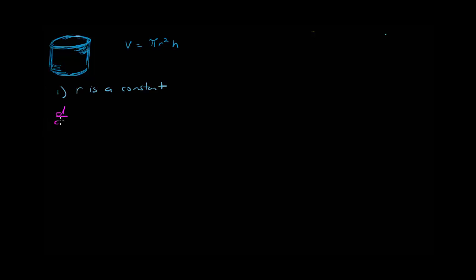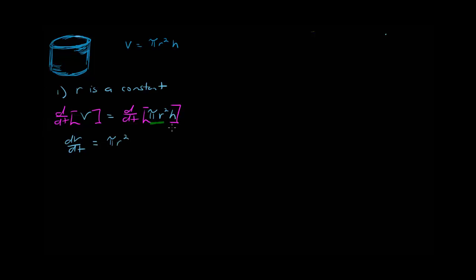Let's take the derivative of the left side with respect to time and the right side with respect to time. We're treating volume and height as functions of time; R is constant. The derivative of V with respect to t, where V is a function of time, is dV/dt — from the chain rule. On the right side, pi and r are both constant, so pi r squared is a constant. The derivative of a constant times a function is the constant times the derivative of the function, giving us pi r squared times dh/dt. So the related rates equation for this scenario is: dV/dt = πr² dh/dt.